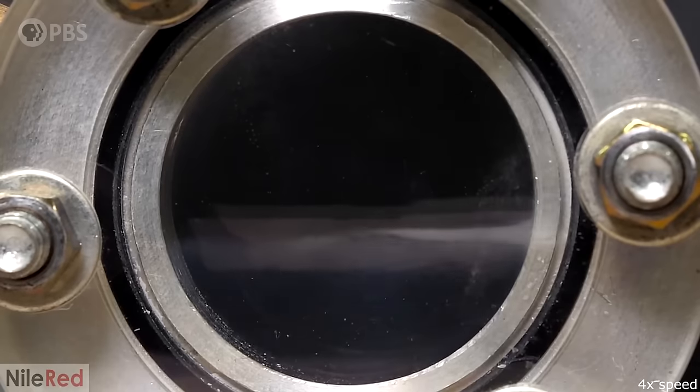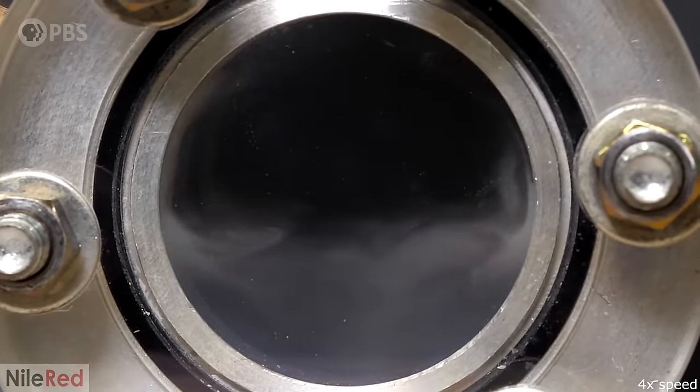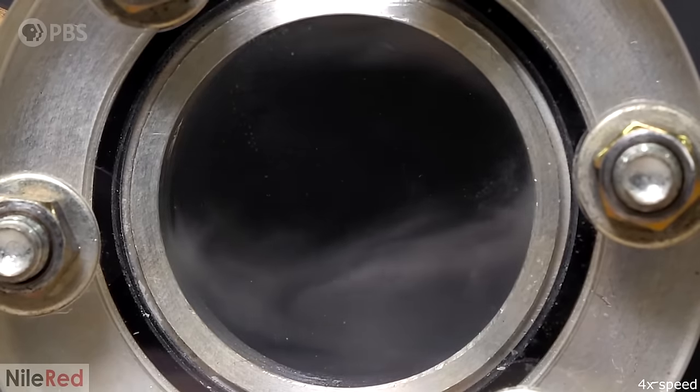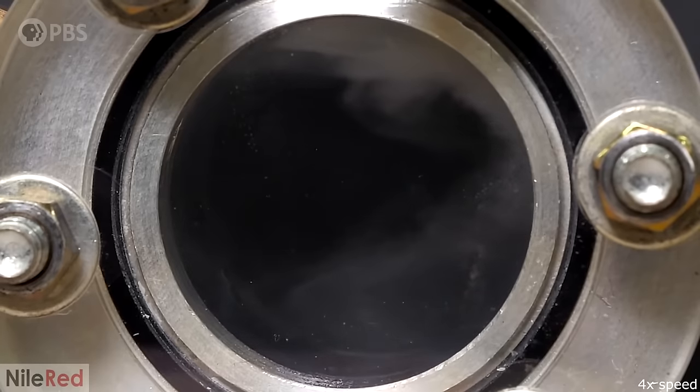Eventually the density of the gas and the liquid become the same. At that point, microscopic droplets of the remaining liquid are free to flow and swirl through the gas phase to diffuse. We're now at the critical point.